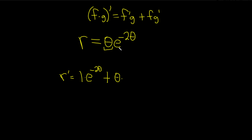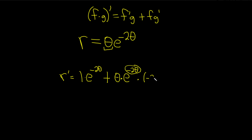Now the derivative of e to the x is e to the x. So here it's e to the negative 2 theta, giving us e to the negative 2 theta times the derivative of the inside — that's the chain rule. The derivative of negative 2 theta is just negative 2.